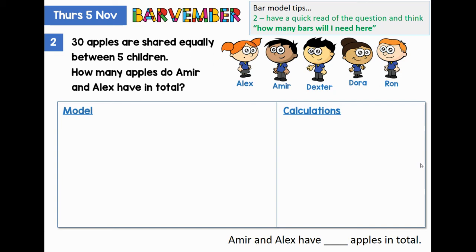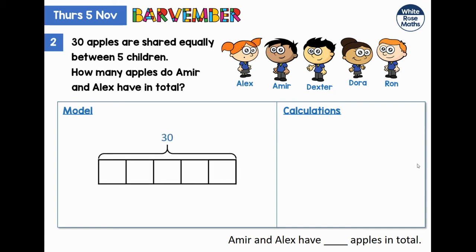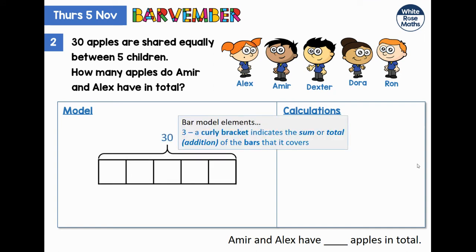We have a similar situation here as well. How many bars will I need? You could say I'm going to use one bar to represent my 30 apples, or I'm going to have five bars — one for each child. I'm going to do this with one bar. Send into your teacher any examples that you do with five. So there's my one bar, and my curly bracket indicates that all those parts represent the 30 apples.